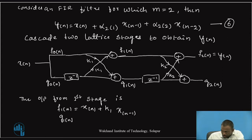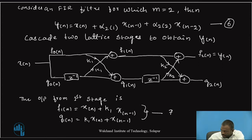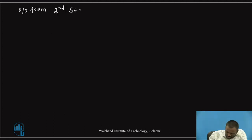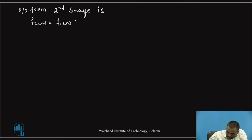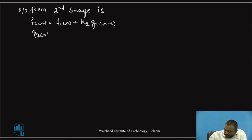G1(n) is equal to K1 X(n) plus X(n-1). Let us call this equation number 7. Output from the second stage is F2(n) equal to F1(n) plus K2 G1(n-1). Similarly, G2(n) is equal to K2 F1(n) plus G1(n-1).